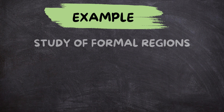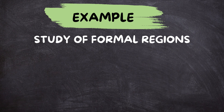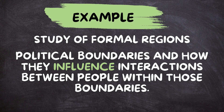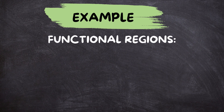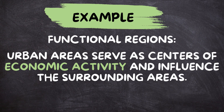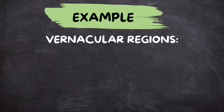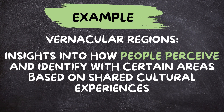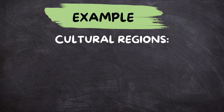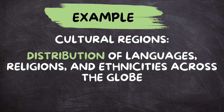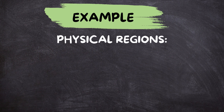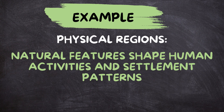The study of formal regions like countries helps geographers understand political boundaries and how they influence interactions between people within those boundaries. Functional regions help explain how urban areas serve as centers of economic activity and influence the surrounding areas. Vernacular regions provide insights into how people perceive and identify with certain areas based on shared cultural experiences, while cultural regions help explain the distribution of languages, religions, and ethnicities across the globe. Finally, physical regions help geographers understand how natural features shape human activities and settlement patterns.